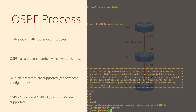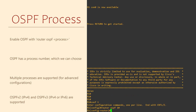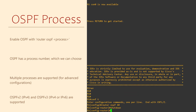If we want to stop the OSPF process, we have two options. One is to remove the OSPF configuration. The other is to enter the shutdown command. This is more gentle, as it keeps all our configuration in place and allows us to turn it on again with no shutdown.